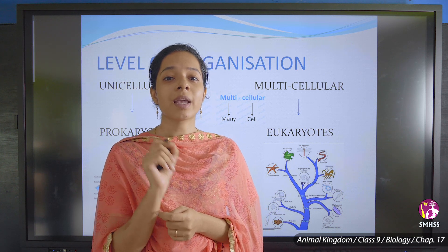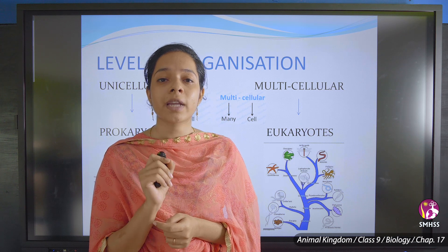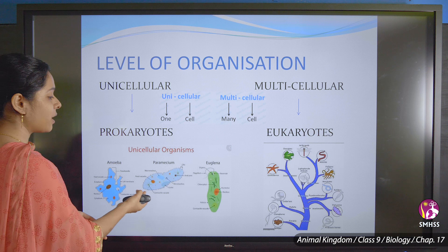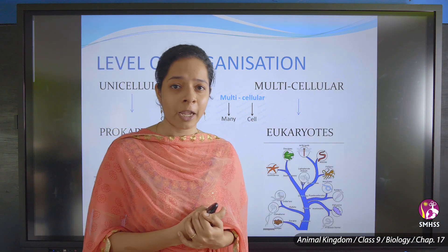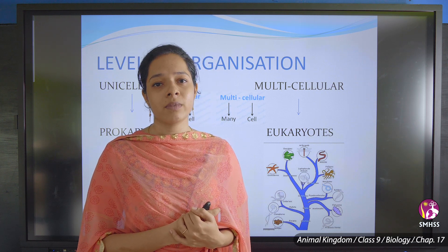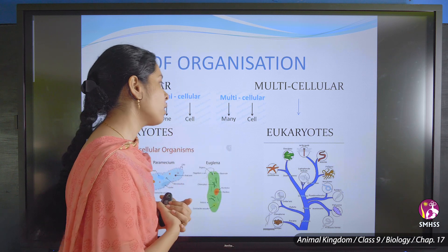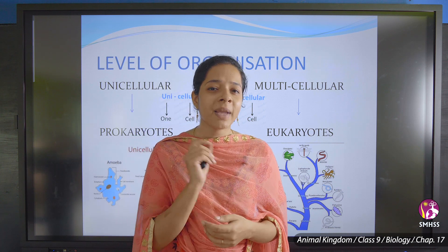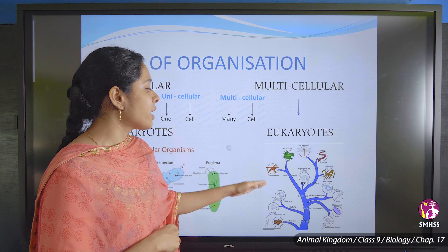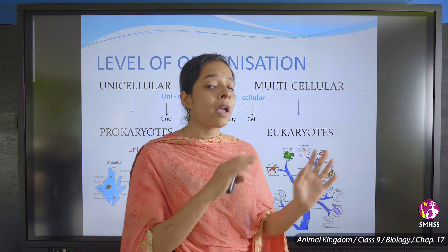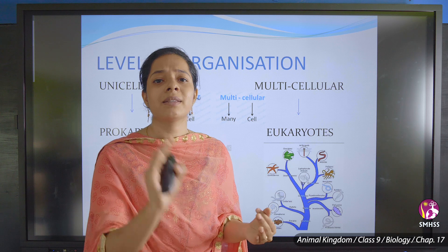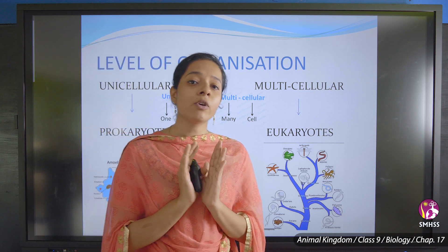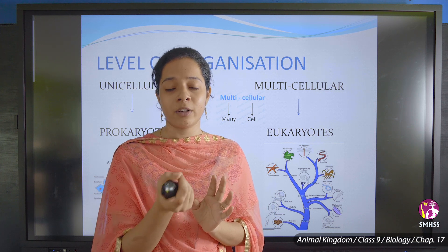Unicellular organisms are called prokaryotes. Examples include amoeba, paramecium, and euglena — all studied in lower classes. Multicellular organisms are called eukaryotes, meaning many-celled organisms. Animals, humans, snakes, reptiles — all come under eukaryotes. So levels of organization is based on whether organisms are unicellular or multicellular.